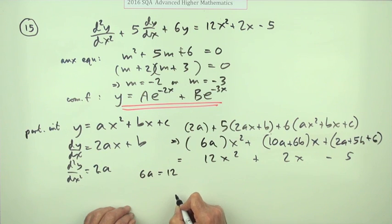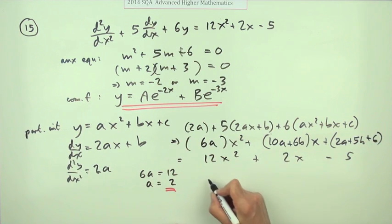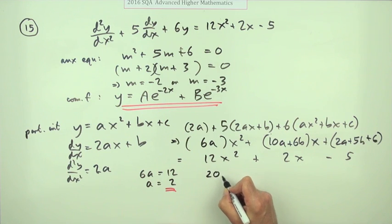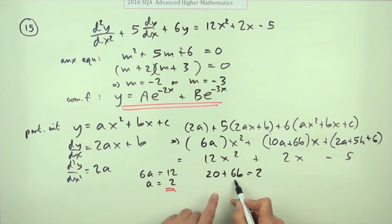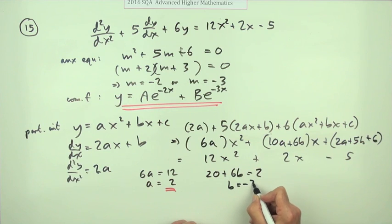So I've got these equations. 6a must make 12. So a must be 2. Pop that into here. 10a, which is now 20, plus 6b must make 2. Equating the coefficients. So 6b must be minus 18. So b is negative 3.